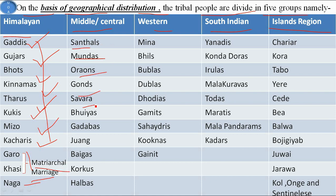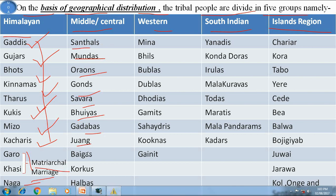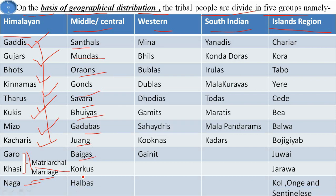In Middle or Central India, the tribes include Santals, Mundas, Uraons, Gonds, Sawaras, Bhuyas, Gadabas, Juang, Baigas, Korkus, and Halvas.